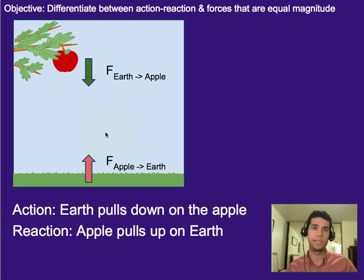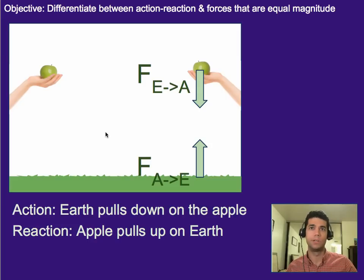Which brings me to an important distinction. So, let's imagine this apple again, but now it's being held in somebody's hand. The action force is that Earth pulls down on the apple, and the reaction force in this case is that the apple pulls up on Earth. Notice that there's no mention of the hand yet. This is one action-reaction pair, and it's what determines the weight of the apple.